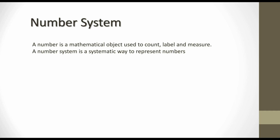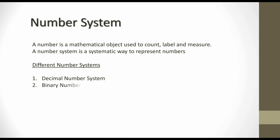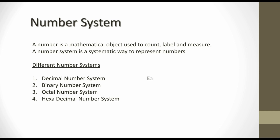There are different types of number system. The first one is the decimal number system, which is used in our day-to-day life. The second one is the binary number system. The third one is the octal number system. The fourth one is the hexadecimal number system. We will explain these four number systems in this video.